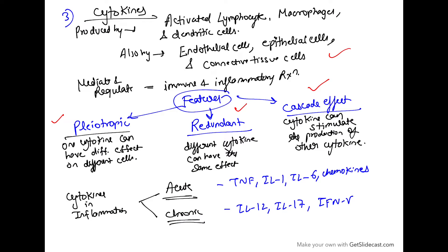Now we are talking about cytokines. Cytokines are produced by activated lymphocytes, macrophages, or dendritic cells. They are also produced by endothelial and epithelial cells of the connective tissues, and they mediate immune and inflammatory reactions. There are three important features of cytokines: the first is the pleiotropic effect, which means one cytokine can have different actions on different cells.